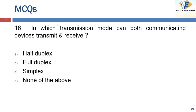In which transmission mode can both communicating devices transmit and receive at the same time? The answer is full duplex. And what is an example of full duplex communication?